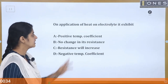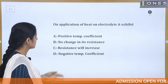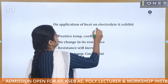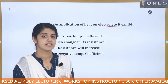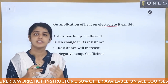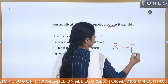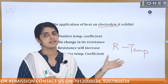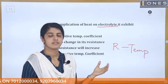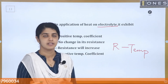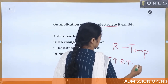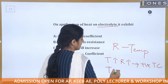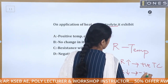One application of heat on an electrolyte — it exhibits positive temperature coefficient, no change in resistance, resistance will increase, or negative temperature coefficient. We classify materials based on temperature coefficient. If temperature increases and resistance increases, that is a positive temperature coefficient. If temperature increases and resistance decreases, that is a negative temperature coefficient.